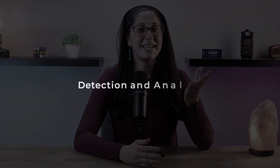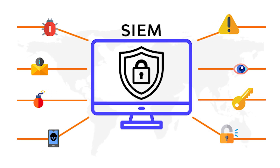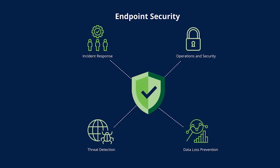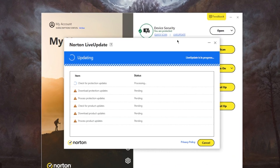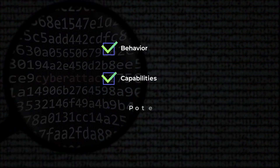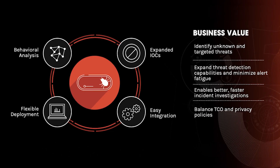Now we move on to phase two, which is the detection and analysis phase. The focus shifts to identifying and understanding the nature of the malware incident. First, you have Security Information and Event Management, also known as SIEM. Implementing SIEM tools enables real-time monitoring of network activities and helps in the early detection of suspicious behavior. Then you have endpoint protection — deploying advanced endpoint protection solutions helps detect and block malware at the device level. Regularly updating antivirus definitions is also important to stay ahead of emerging threats. This phase also includes malware analysis, where conducting in-depth analysis of malware samples provides insights into its behavior, capabilities, and potential impact, helping to tailor response strategies specifically for your organization.